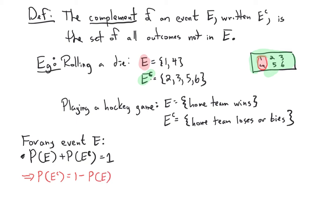Rearranging the complement formula gives P(E^c) = 1 − P(E). For example, if the experiment is observing the weather and E is raining, with P(E) = 30%, then the probability of it not raining is 1 − 0.30 = 0.70, or 70%.